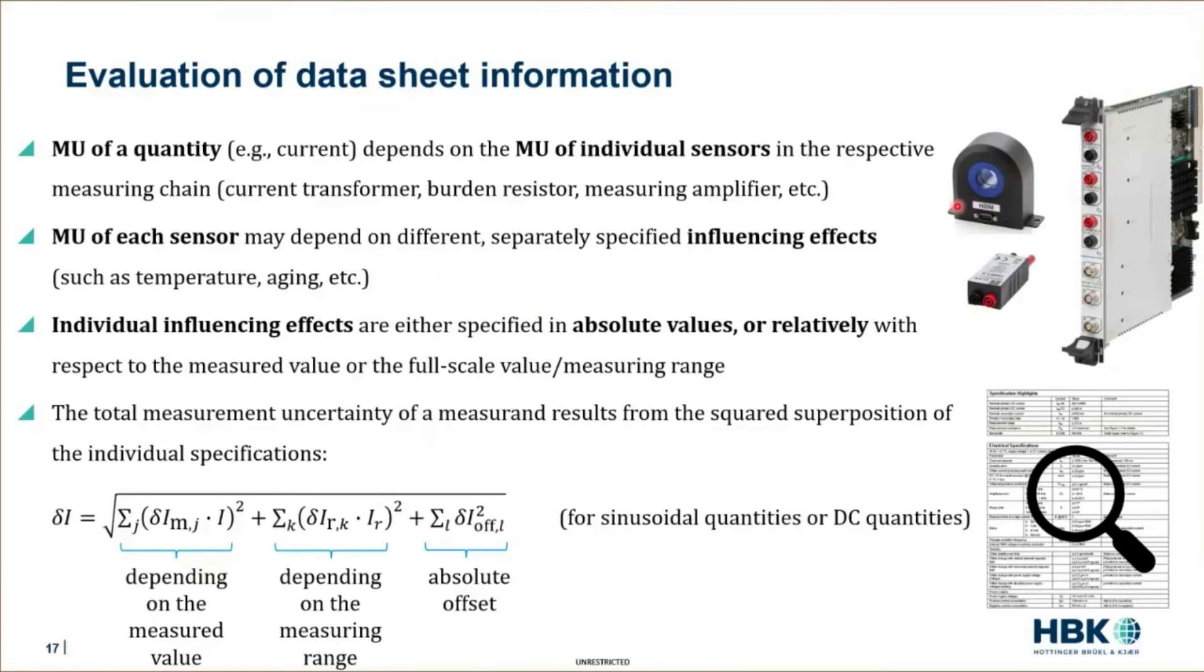If you now have the different influencing effects of all those components, these may again be specified in different ways. Some of them are absolute values, which means for current perhaps several microamps or milliamps. And others are specified relatively with respect to measuring value or measuring range. And some of them are specified in the combination of all three.